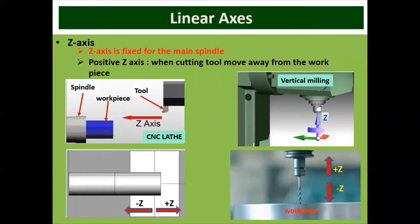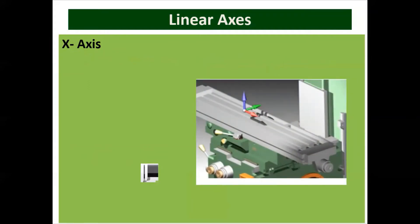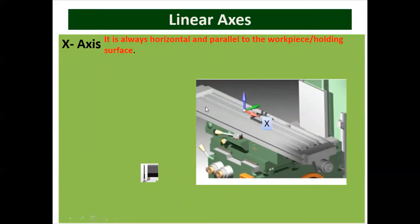So the Z axis is always considered as the main spindle axis. Next, we go for the X axis. The X axis is always horizontal and parallel to the workpiece surface, and it is the longest axis indicating the longitudinal travel of the work table, as shown in the diagram for the milling machine.